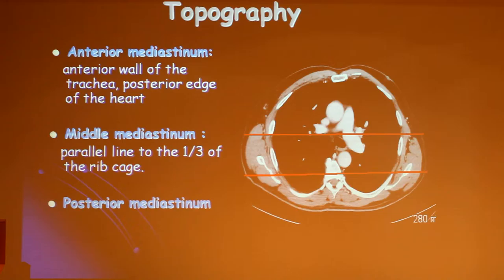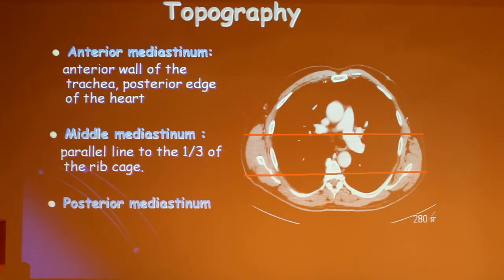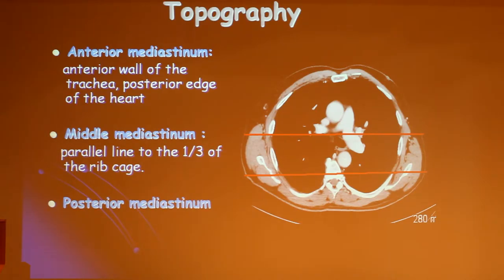We have to discuss the three mediastinal compartments: the anterior mediastinum, the middle mediastinum, and the posterior mediastinum. The anterior mediastinum extends until the anterior wall of the trachea. The middle mediastinum exists between the anterior mediastinum and a parallel line to the posterior third of the vertebrae, as you can see here. And behind this is the posterior mediastinum.